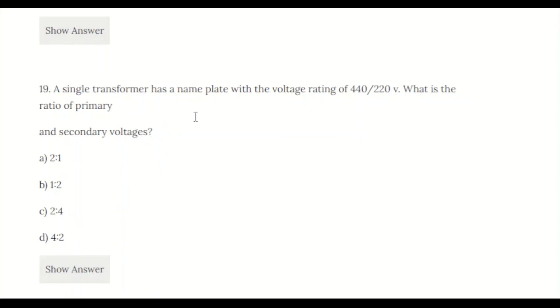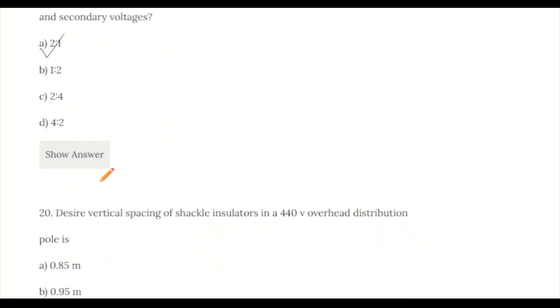Question 19: A single transformer has a nameplate with the voltage rating of 440/220 volt. What is the ratio of primary and secondary voltages? Using the formula V2/V1 = N2/N1, the ratio of primary to secondary voltage is 2:1.